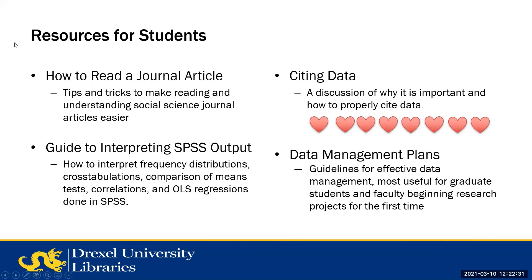In addition to the specific teaching resources, there's a large collection of what they call 'Resources for Students.' 'How to Read a Journal Article' is a three-page PDF that I think should be given to every graduate and undergraduate student who has an assignment involving reading journal literature. It's an excellent summary of the different parts of an article, what questions to keep in mind when looking at each section, and what parts to read carefully for different purposes.